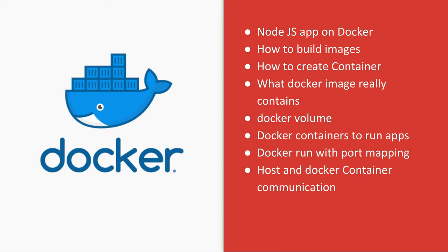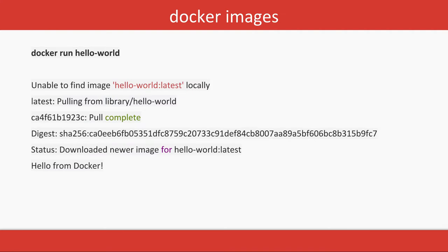We'll cover host and Docker container communication — how the host OS and the container talk to each other. The container needs to export a port which is mapped to a port exposed by the host, so the host can access Nginx through the host port.